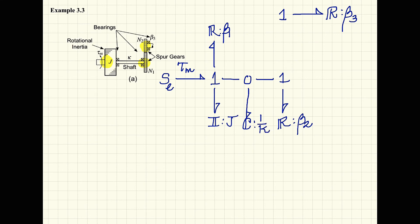Between the next set of one junctions, I have got a transformer that represents my gear pair, and the gear pair is going to have a gear ratio of N1 divided by N2.